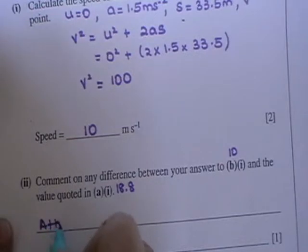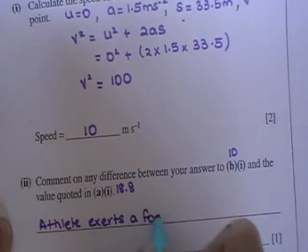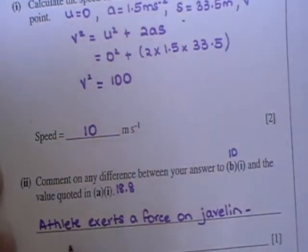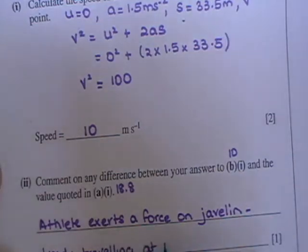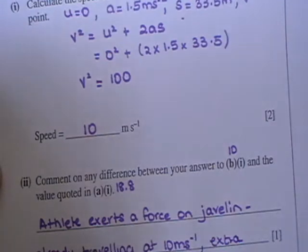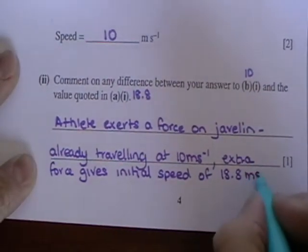Well, of course, the difference is that the athlete then exerts a force on the javelin at 10 metres per second because it was in the athlete's hand. And then extra force gives it initial speed of 18.8. Now you probably wouldn't need just as much information as that. It's hard to know, we've no mark scheme for this question.